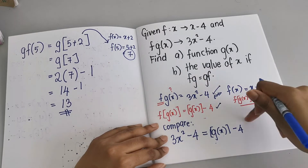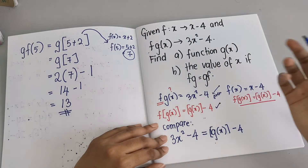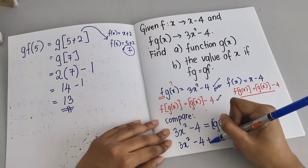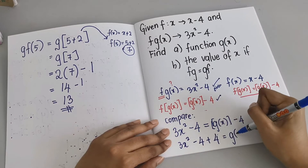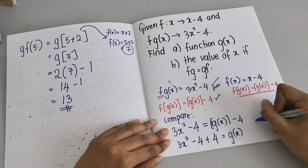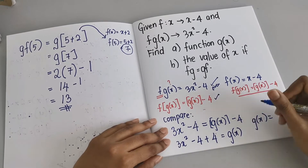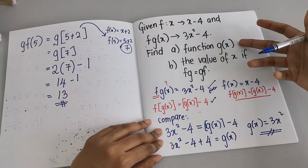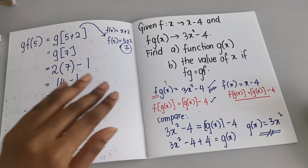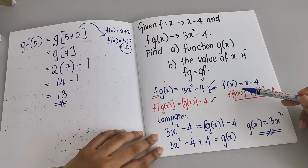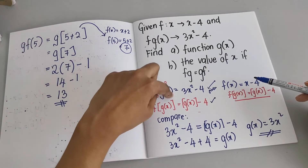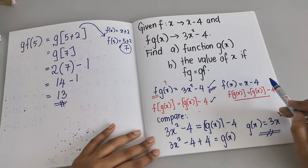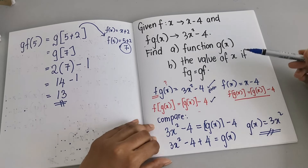Taking the given: 3x² − 4 = g(x) − 4. Bring the number to the left-hand side: 3x² − 4 + 4 = g(x). So g(x) = 3x². We have obtained our function g(x). The key to remember is: if the inner function is unknown, use this comparison method.